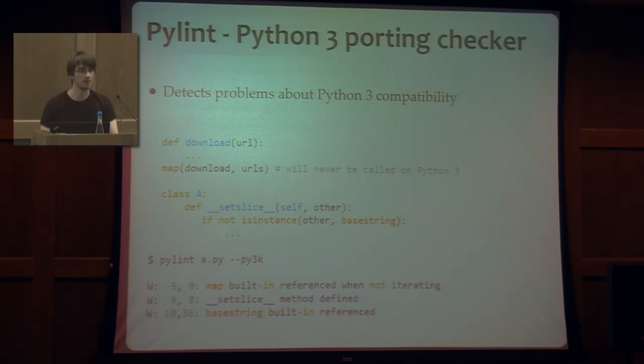And we also have a Python 3 porting checker which detects problems about compatibility between Python 2 and Python 3. And this component disables all the other checkers so you won't have tons of messages when running it. Only those that are responsible for this particular use case. And as you can see from this example, let's say we have that function called download which receives a link and downloads it somewhere. And later on we are calling that function with the map built-in. But that code will never run on Python 3 because the map is lazy evaluated. So we need to either convert that to a list or transform that map code to a for statement. And the Python 3 porting checker just says, hey, you're using this built-in when not iterating. And that's surely an error or something like that.